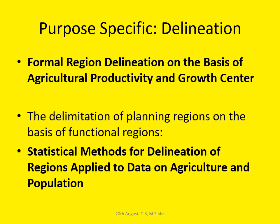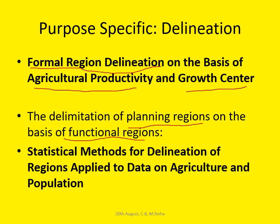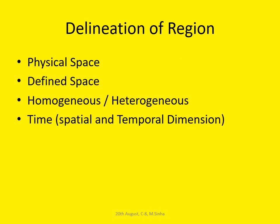For example, a formal region is delineated on the basis of agricultural productivity or a growth center. A planning region is delineated on the basis of functional region. Statistical methods for delineating regions are applied to data on agriculture and population. Delineating a region produces a clear-cut defined geographical area related to physical space. The region may be heterogeneous or homogeneous, and delineation depends on time scale and spatial scale — it is a spatiotemporal phenomenon.